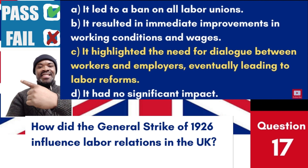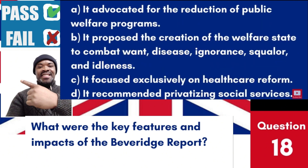Question 18: What were the key features and impacts of the Beveridge Report? a. It advocated for the reduction of public welfare programmes. b. It proposed the creation of the welfare state to combat want, disease, ignorance, squalor and idleness. c. It focused exclusively on health care reform. d. It recommended privatising social services. Answer: b. It proposed the creation of the welfare state to combat want, disease, ignorance, squalor and idleness. The Beveridge Report was instrumental in laying the foundations for the modern British welfare state, including the establishment of the National Health Service.